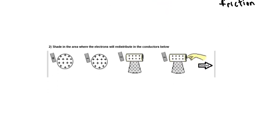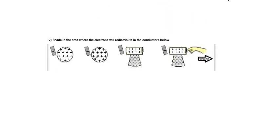Now let's do this next problem. Shade in the area where the electrons will redistribute in the conductors below. So these are conductors meaning they are materials that allow electrons to move. And I'm going to choose red to represent the electrons. Now remember the basic rules here.